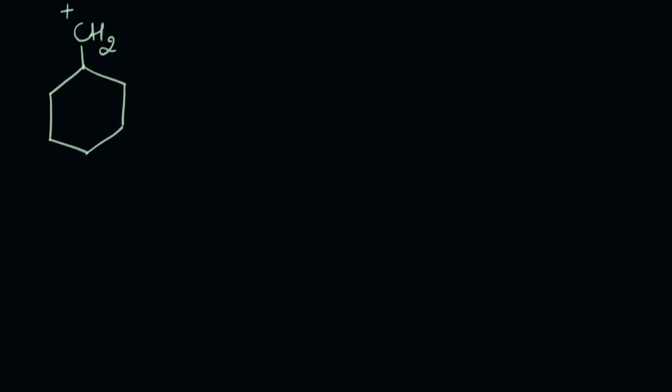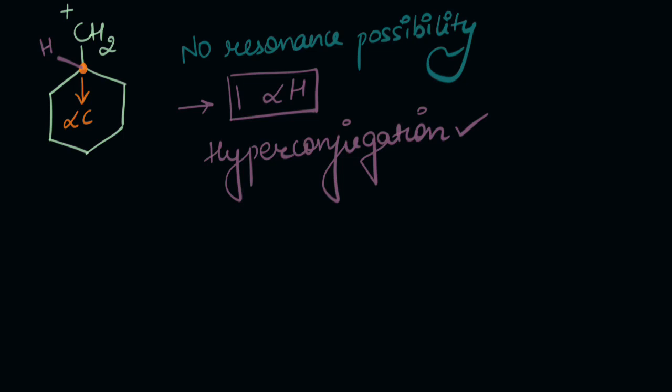If we look at this carbocation, there's no pi bond, lone pair of electrons, or negative charge alternate to this positive to help it get resonance stabilized. So there's no resonance possibility. Can I see something else? Alpha hydrogens? Yeah, there is one alpha hydrogen. So there's a possibility of hyperconjugation. So it is stabilized via hyperconjugation.